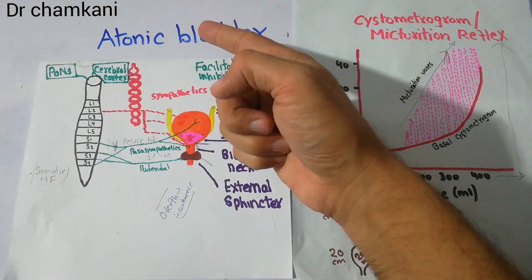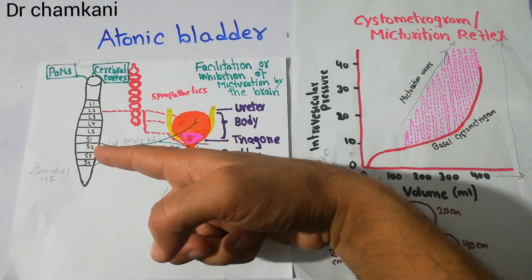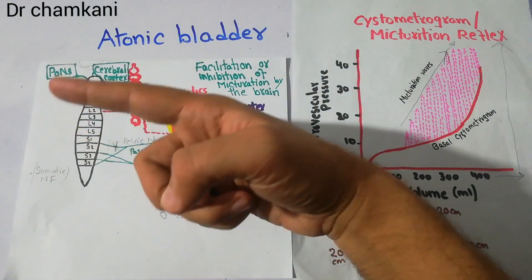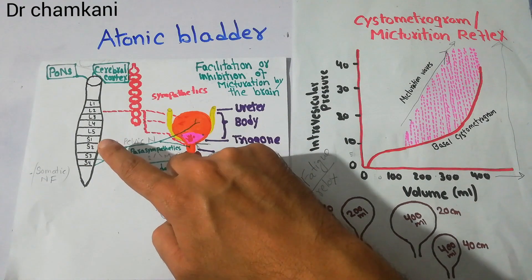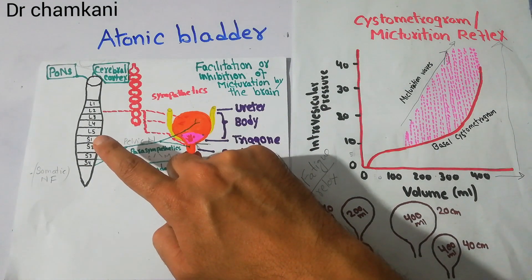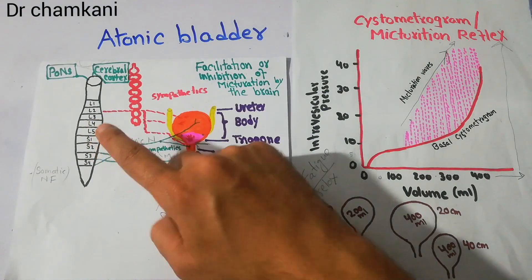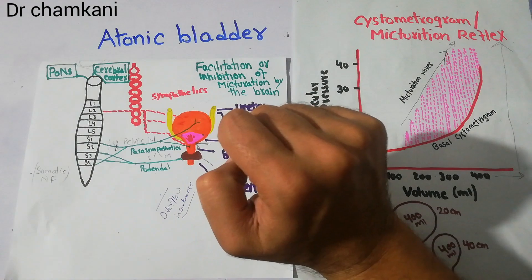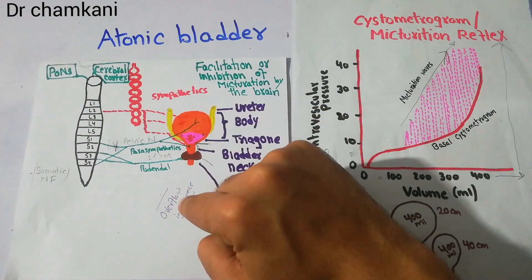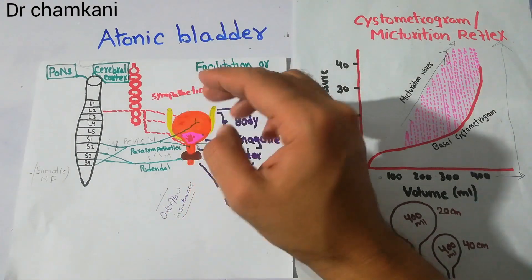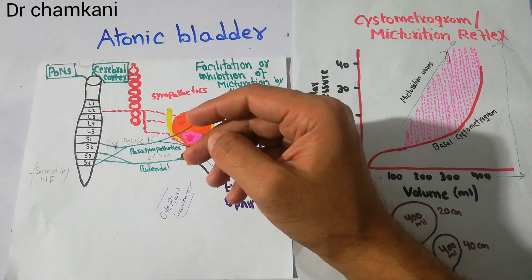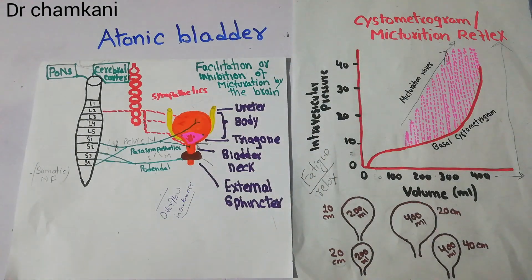There are many causes for atonic bladder and for damage of these nerves, but the most common cause is crush injury. Any accident causing crush injury at this level will lead to atonic bladder, in which overflow incontinence occurs — a large amount of urine accumulates in the urinary bladder and then dribbling occurs. That's all about atonic bladder. Thanks for watching the video.